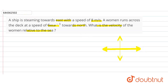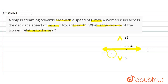Here, this is the direction — east, west, north, south. The ship is streaming toward east with a speed of 8 meter per second, and the woman runs across the deck at a speed of 6 meter per second towards north. So we have to find the velocity of the woman relative to the sea.